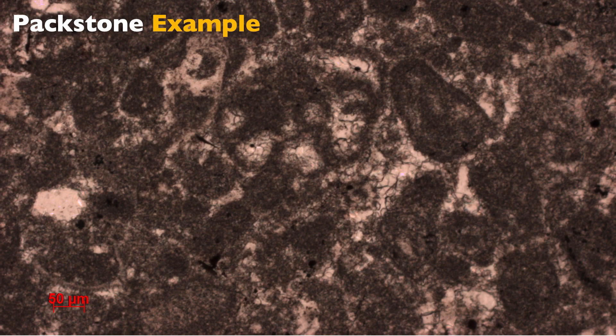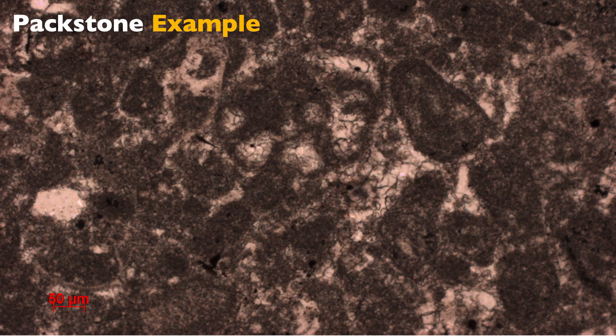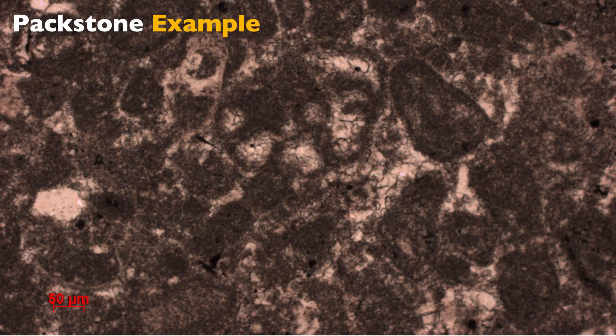This is a deliberately confusing example. If you look at this thin section casually, it appears that it's all mycrite with a little bit of cement in between. But if you look carefully, you can see that the mycrite is actually forming grains. These grains are known as peloids — effectively fecal pellets that were micritized early during their life cycle. They are grains of mycrite, and in the Dunham classification we consider them as grains. You can see grains with some mud around them, and the grains — those peloids — are touching. So this is a packstone.